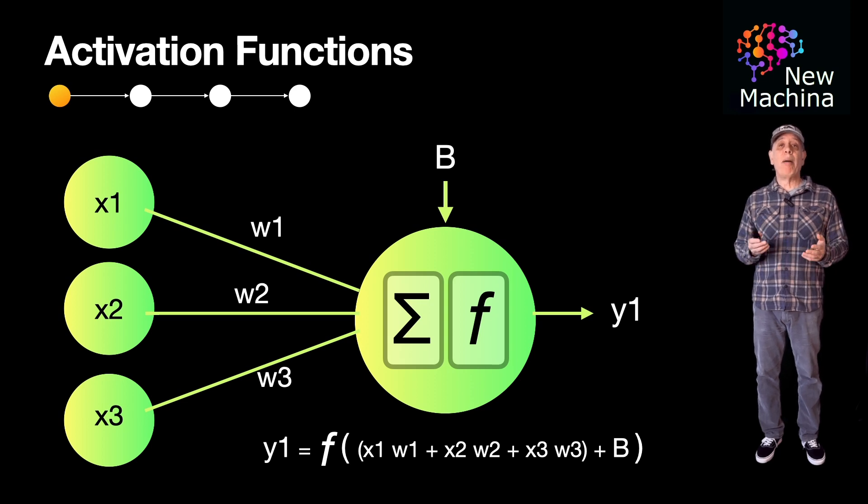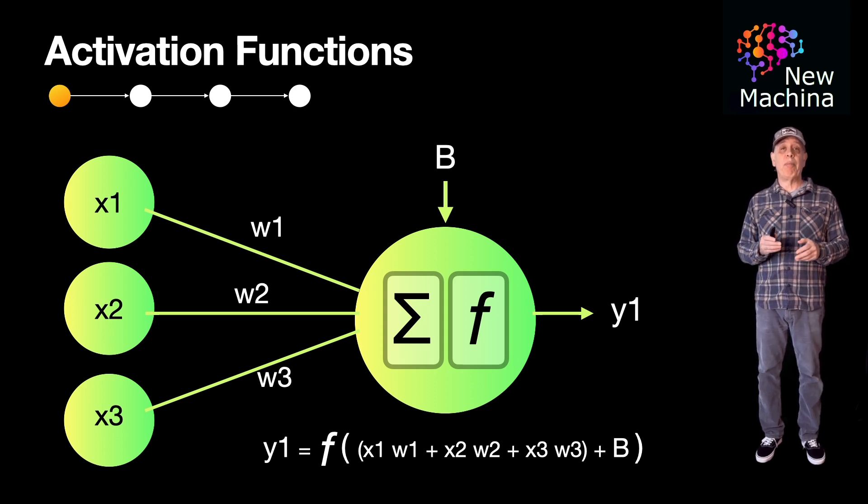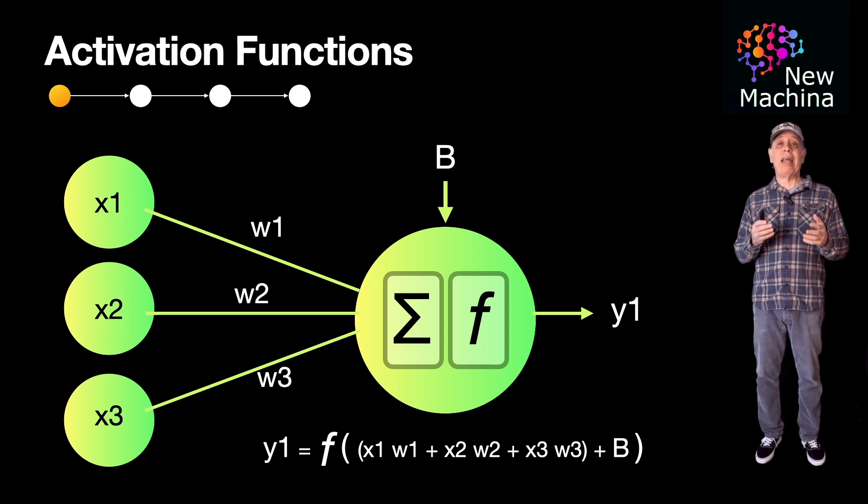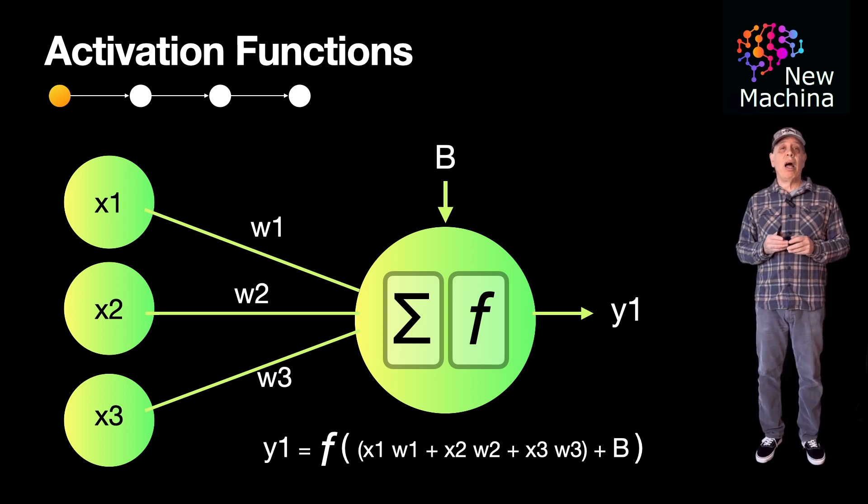There are several options when choosing an activation function. Activation functions introduce non-linearity to the model. Examples are ReLU, Sigmoid, TanH, and Softmax. I'll do a video later deep diving into the pros and cons around all these activation functions.